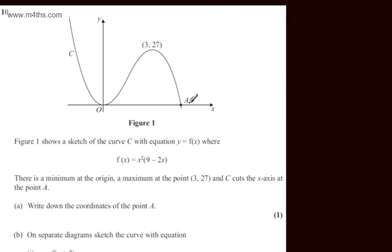Y will be equal to 0 when the curve meets or crosses the x-axis. So 0 will be equal to x squared multiplied by the 9 minus 2x. This tells me that x would be equal to 0, which corresponds to the origin and this repeated root.